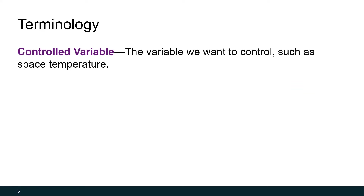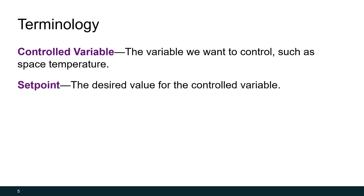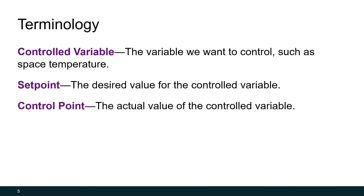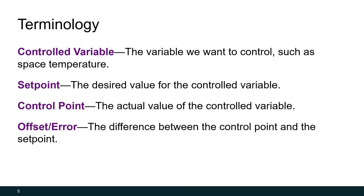Throughout this video, we'll be using some terminology that is important to understand. The first term is the controlled variable — the variable we want to control. An example would be a home thermostat where we're trying to control space temperature, so the controlled variable is space temperature. What we set our thermostat to is called the set point — the desired value for the controlled variable. What the temperature in your house actually is, is the control point. The difference between the two is called the offset, or the error — these terms are interchangeable.